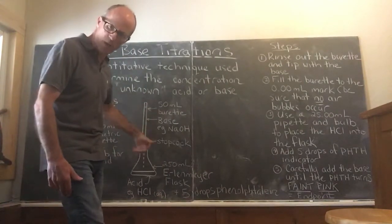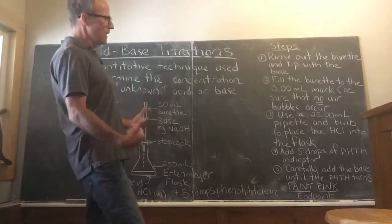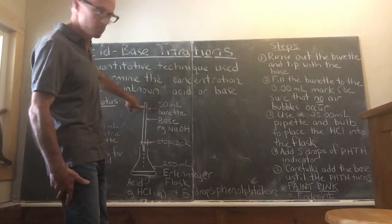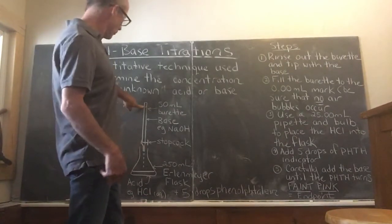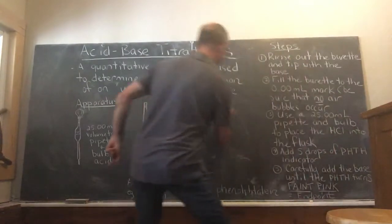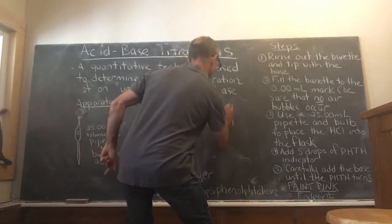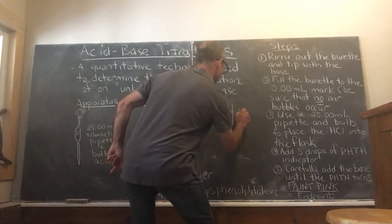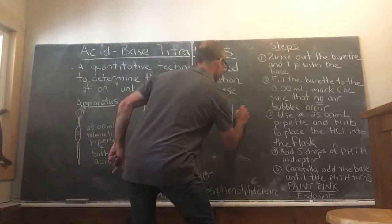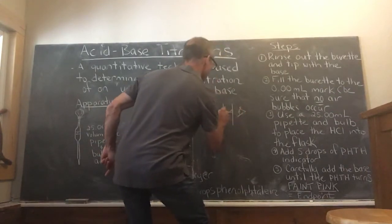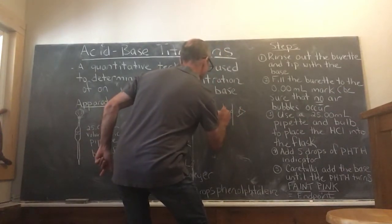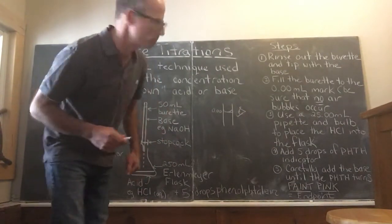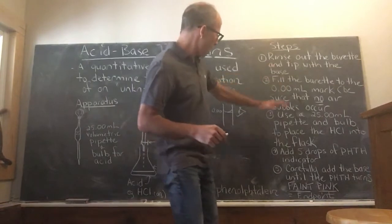Once you've rinsed out the burette and you've allowed some of it to go through the stopcock down through the tip, and you're confident that the entire burette is wet with the base, only then you can fill up the burette to the 0.0 mark at the very top. Use the bottom of the meniscus. Remember the bottom of the meniscus looks like this, and basically at eye level - there's your eyeball. This would be the top of the burette, and you would be confident that burette is full with base, no bubbles.